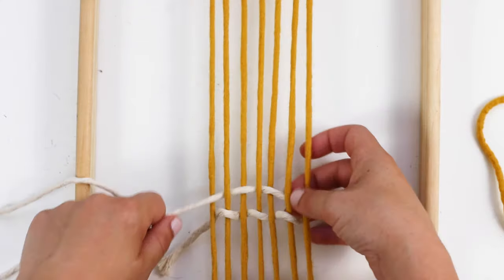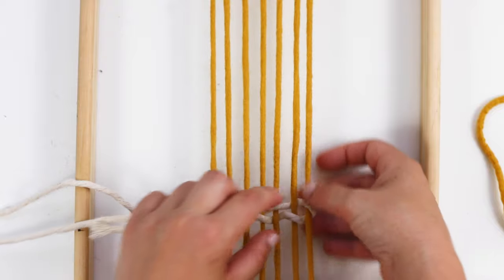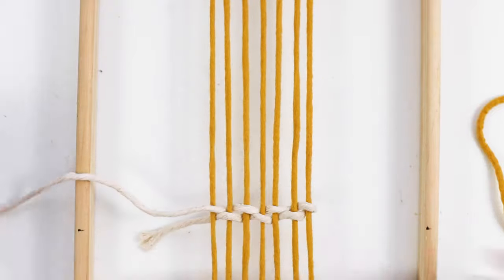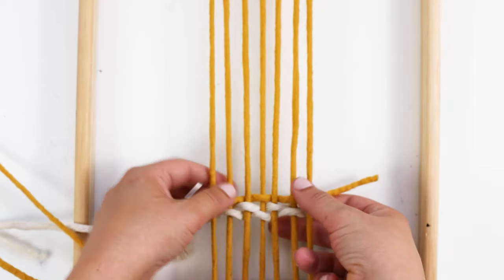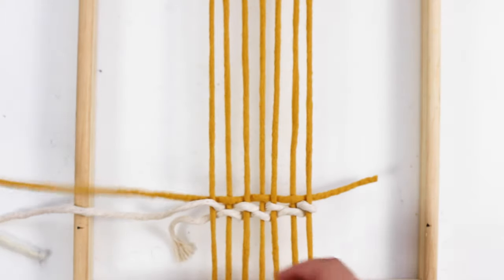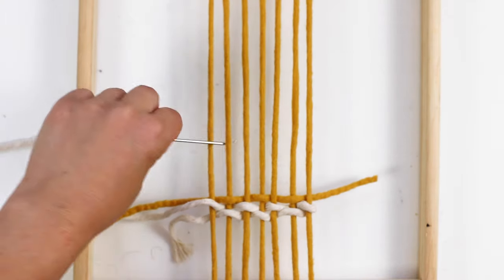First, weave two rows with a different color than the warp. I'm using a natural rope. Then weave one row with the same color as the warp. I'm using a yellow felted yarn.